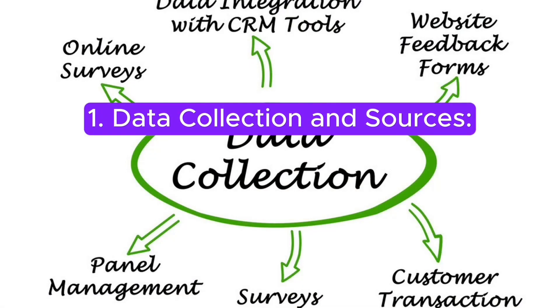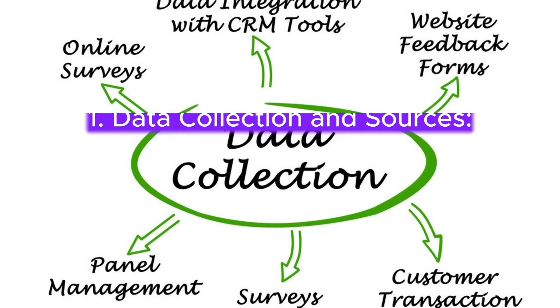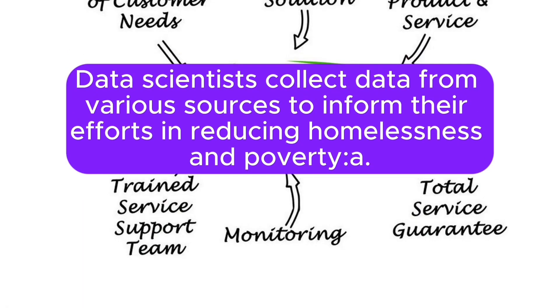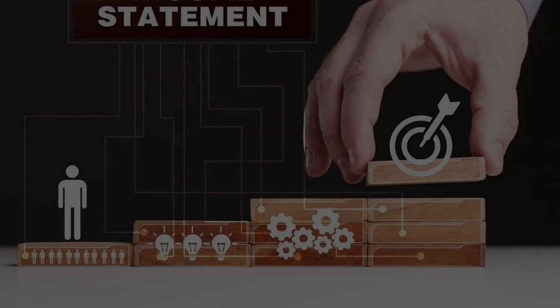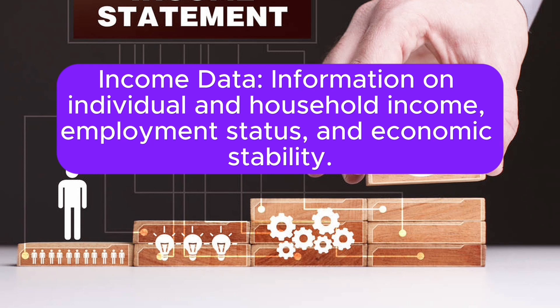Data Collection and Sources. Data scientists collect data from various sources to inform their efforts in reducing homelessness and poverty. This includes income data — information on individual and household income, employment status, and economic stability.